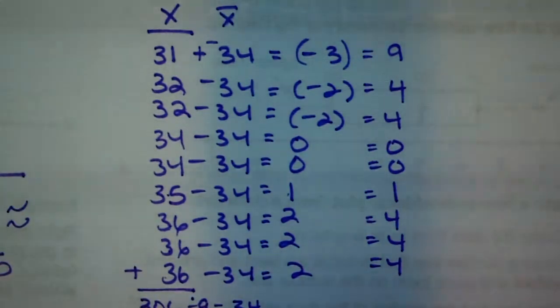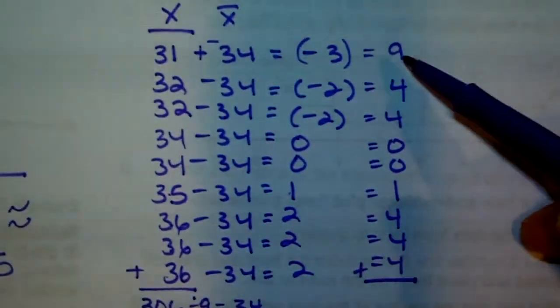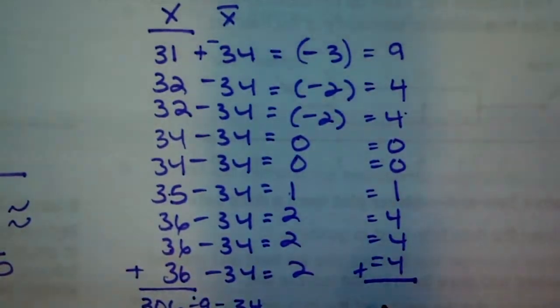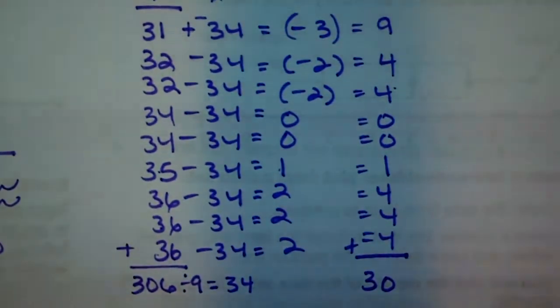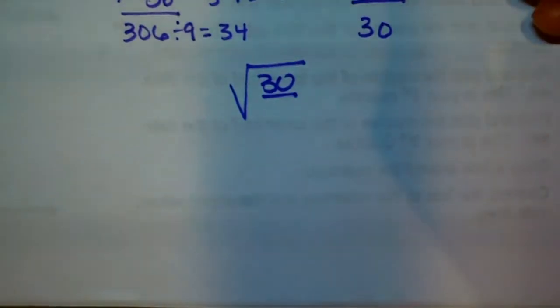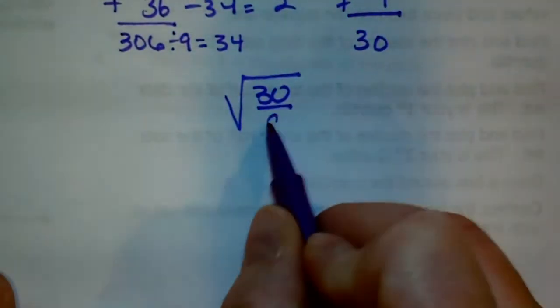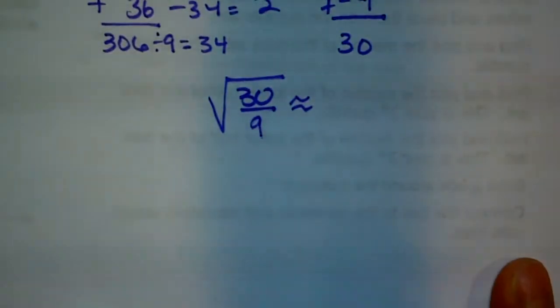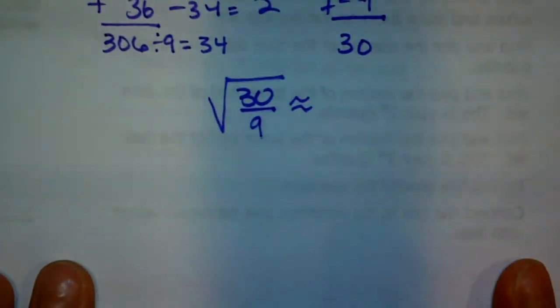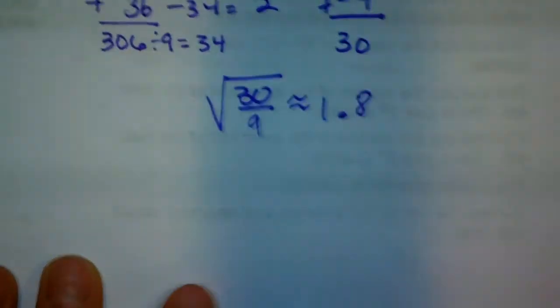Add them all together: 9 plus 4 plus 4 plus 0 plus 0 plus 1 plus 4 plus 4 plus 4 — hopefully you got 30. Now take the square root of 30 divided by the number of values, which is 9. In your graphing calculator, press 2nd, x-squared, then type 30 divided by 9. When you hit enter you get 1.82574... Rounding to the nearest tenth gives 1.8.